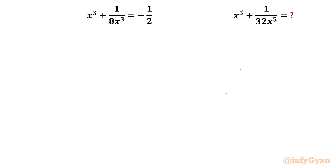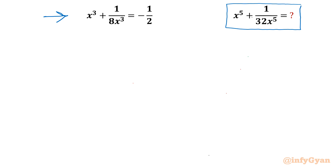Welcome back to Infigyan friends. In this video we are going to tackle one very interesting question from reciprocal equations and expressions. We have to simplify the expression x⁵ + 1/(32x⁵), given the equation x³ + 1/(8x³) = -1/2.